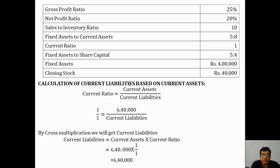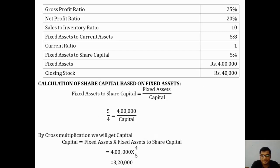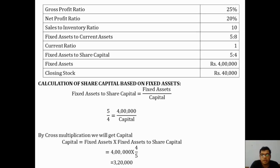Now we calculate share capital using the fixed assets to share capital ratio. The formula is fixed assets divided by capital, and the ratio is 5:4 — 5 for fixed assets and 4 for share capital. So 5/4 equals 4 lakhs divided by capital. By cross multiplication, capital equals 4 lakhs into 4 by 5, which comes to 3,20,000 rupees.